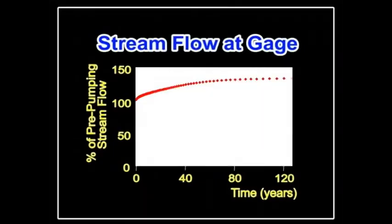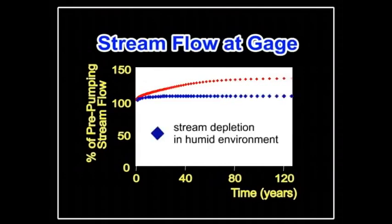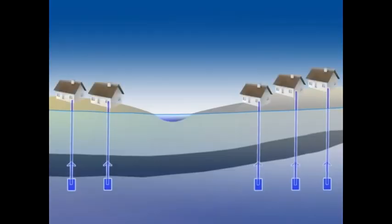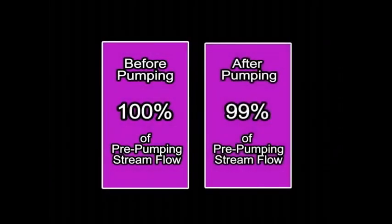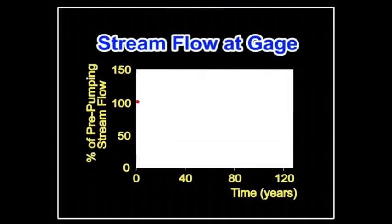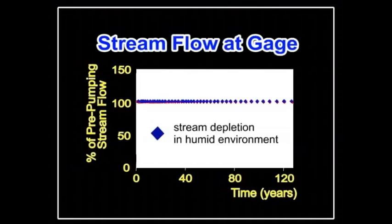In the humid environment simulated in the parallel track of this video, the impact is smaller. If the water is pumped from the deep aquifer and the wastewater is collected, treated, and returned to the river near the mouth of the basin, the stream flow is barely affected — flow decreases to only 99% of what it was before development, and the full impact occurs after 125 years. In the humid environment, simulated in the parallel track of this video, the impact is slightly smaller.